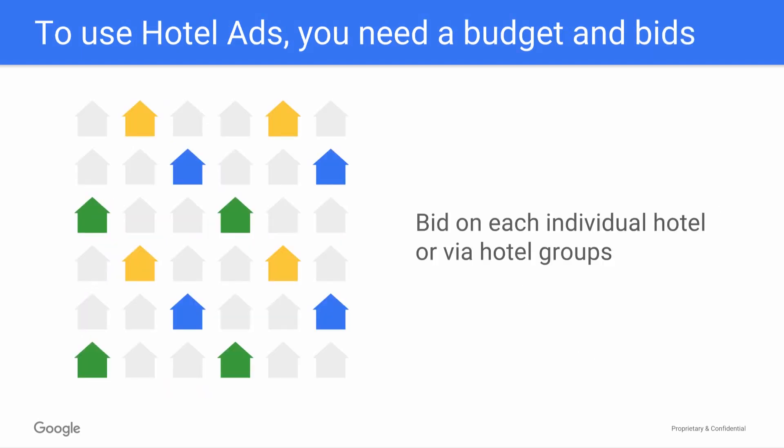Then, to begin advertising with Google Hotel Ads, you'll need to specify a budget and the bids you'd like to use across your properties. You have some options for how you bid on properties, including bidding on each individually, or creating groups of properties that you want to bid similarly on. The following videos will walk you through how to do this and how to ensure you're setting the right bids, but for now, let's discuss the actual platforms you'll use to set these bids.